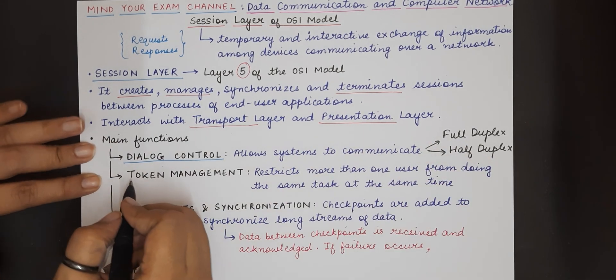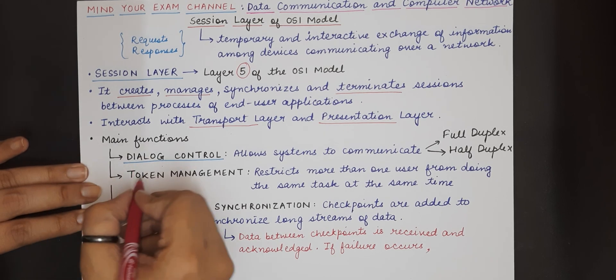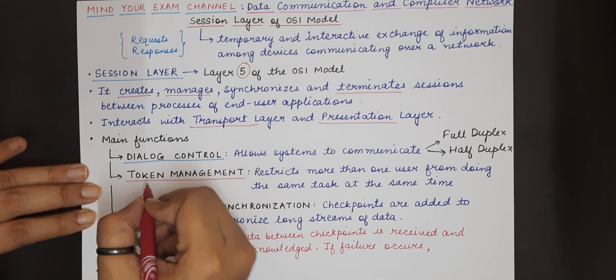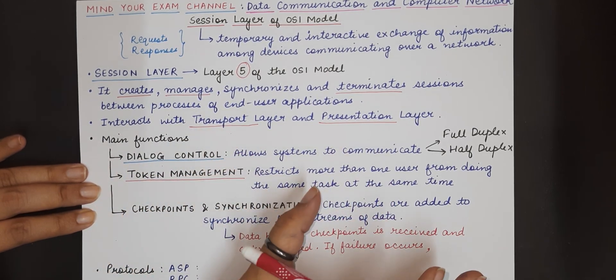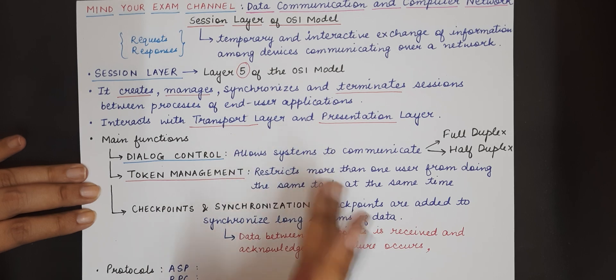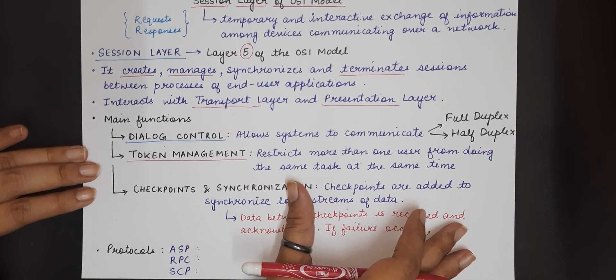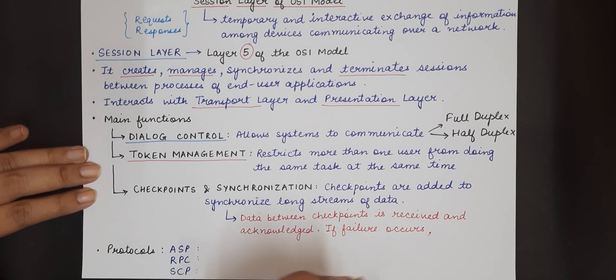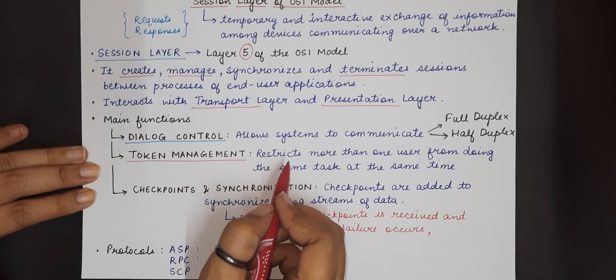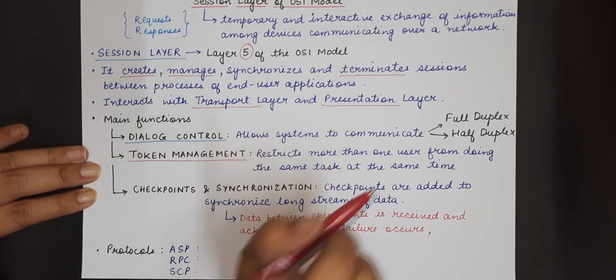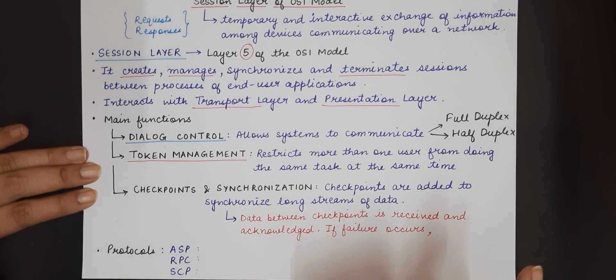Now the second function of session layer is token management. So what is token management? Token is basically a software entity that is given to a machine so that that particular machine can perform the required operations at that given amount of time or at that particular point of time. So the session layer ensures that only one machine at a time performs any critical operation.